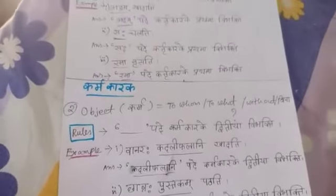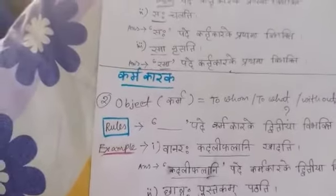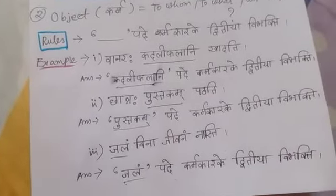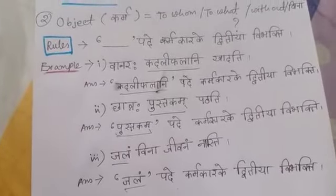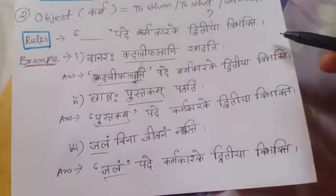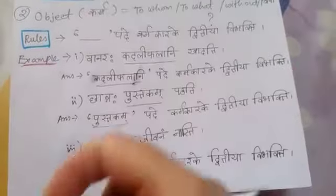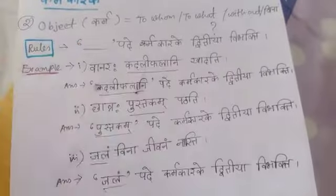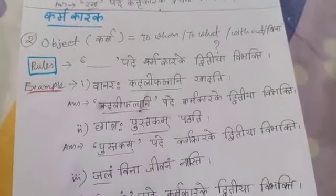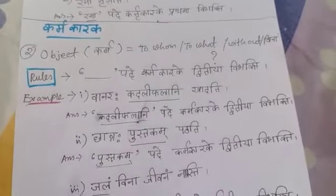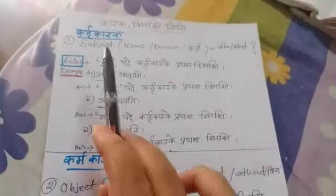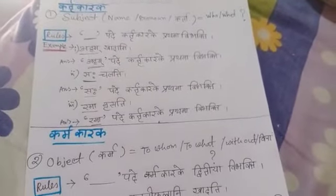One secret tip for exam time: when I give you a sentence, please translate it into English — not on the exam paper, but in your mind. Then it becomes easy for you to understand whether this is a subject or object by asking the question. This much is your work for today — understand karti karak and karma karak nicely. Next day I will take a test.